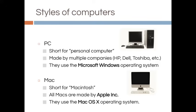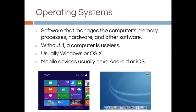OS means operating system. The best example I can think of is a car and what fuel it uses — gas, diesel, or electric. You can't put diesel fuel in a car that's meant to take gas, and vice versa. An operating system is software that manages the computer's memory, processes, hardware, and other software. Without it, a computer is useless. Every computer has to have an operating system — it's usually Windows or OS X.